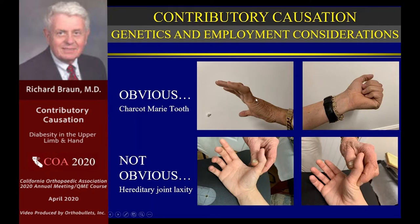If someone comes in with this obvious deformity, you'll immediately likely think of an ulnar palsy along the medial aspect of the elbow. If there are two scars in that area, you'll know something may be unusual. You may want to look to the other side, look at the patient's feet, and take a family history. But if this is true and you have to treat this patient, there's going to be a significant issue of contributory causation. Non-obvious conditions are really difficult because you can't see anything abnormal.